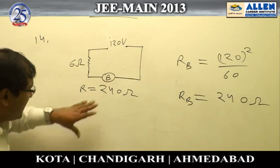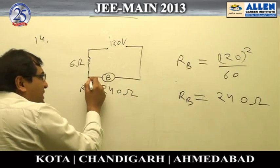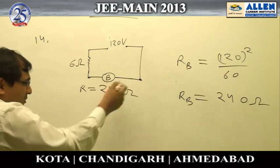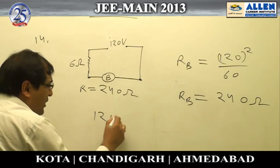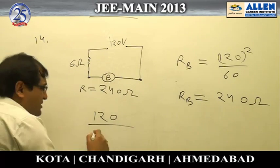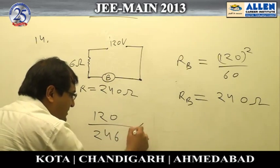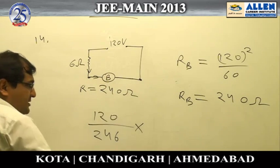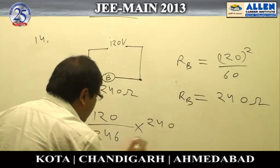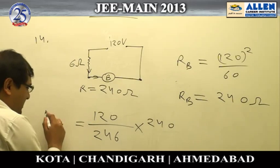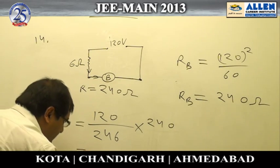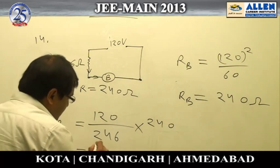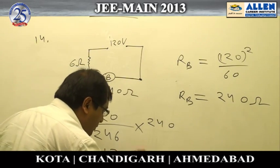The potential drop across the bulb is found by first calculating the current: 120 volts divided by the total series resistance of 246 ohm. Multiplying this current by 240 ohm gives the voltage drop across the bulb, which comes out to be 117.07 volts.